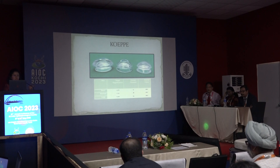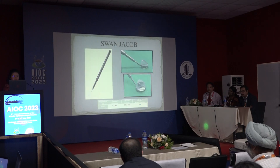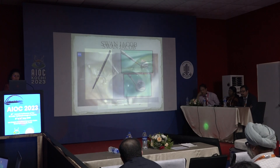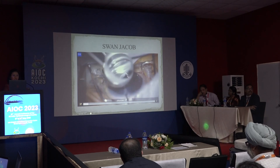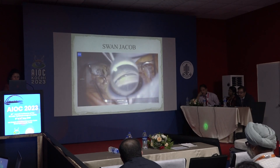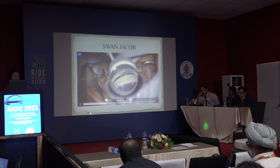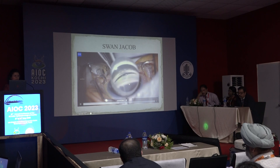The most commonly used is the KP's gonio lens, and depending on the size of the eye we have different sizes — Barkan's and lately the Swan-Jacob gonioscope, which is now in vogue because many angle surgeries are being done. This is a short video clip where we are putting a coupling agent and placing the lens. This is a case of primary congenital glaucoma — we can see the high anterior insertion along with a few iris processes and a goniotomy being performed.